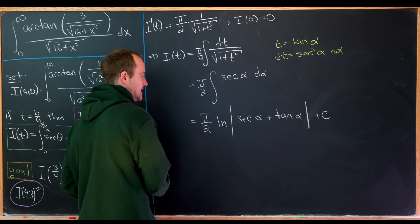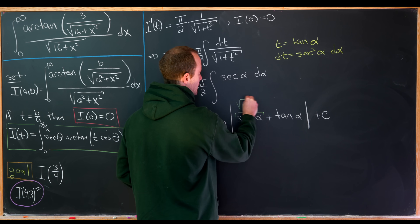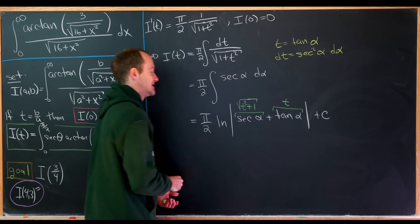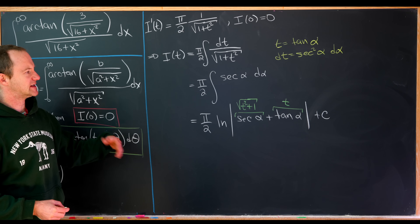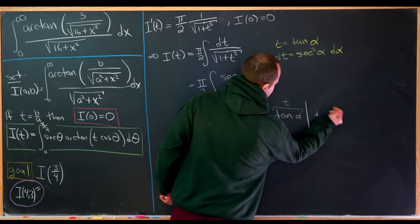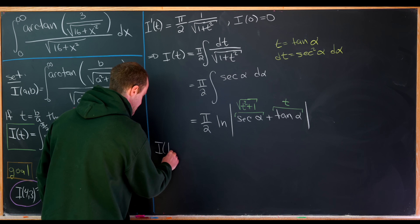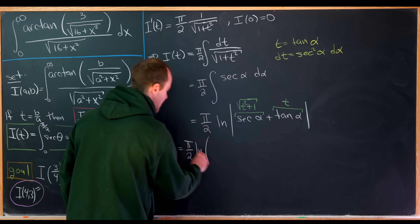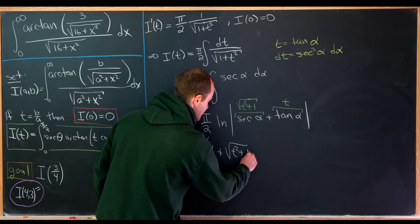Now back-substituting: secant of alpha equals the square root of t squared plus 1 by trig identities, and tangent of alpha equals t. Setting t equal to zero gives the natural log of 1, which is zero, so we don't need a constant of integration. Our closed form is I(t) equals pi over 2 times the natural log of t plus the square root of t squared plus 1.